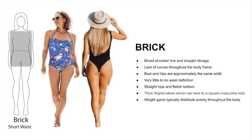When it comes to the brick shape, here are the key features: broad shoulder line and straight rib cage, lack of curves throughout the body frame. Bust and hips are approximately the same width with very little to no waist definition. Straight hips and a flattish bottom. Thick thighs and calves which can lead to square, muscular-looking legs. Weight gain is typically distributed evenly throughout the body. Because there's no waist definition, you need to dress for this body shape and not try to contort it into an hourglass.